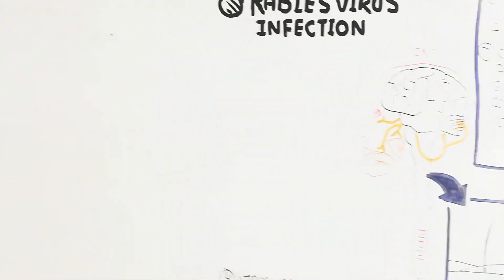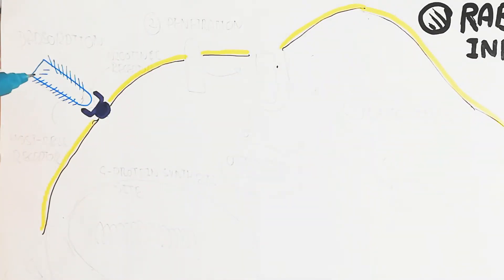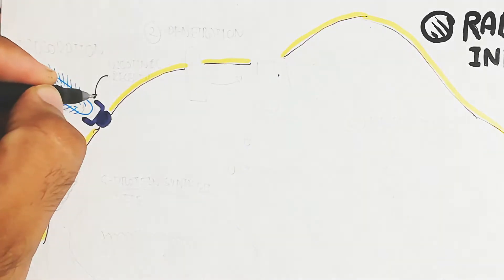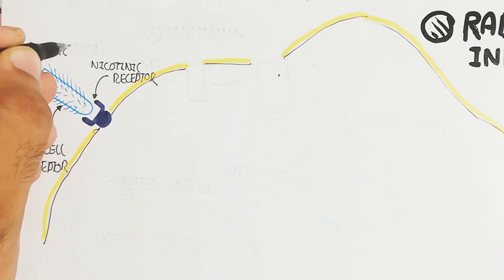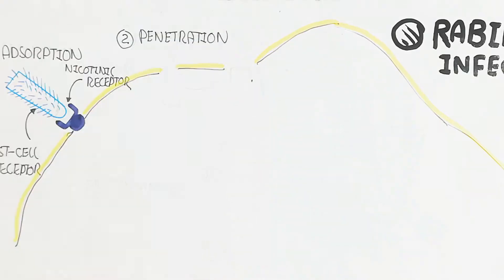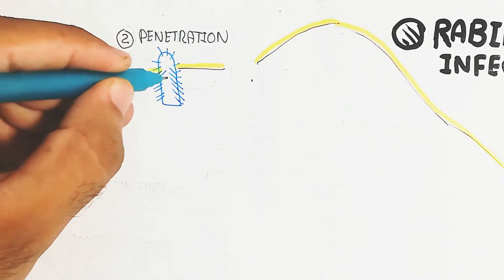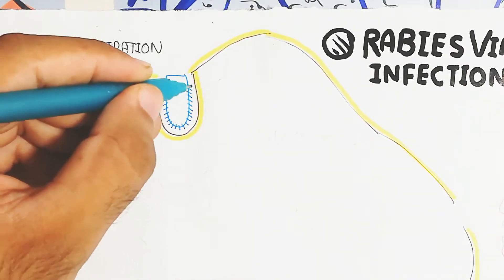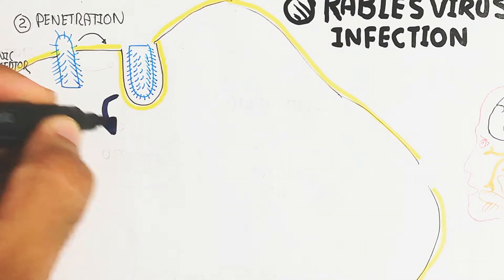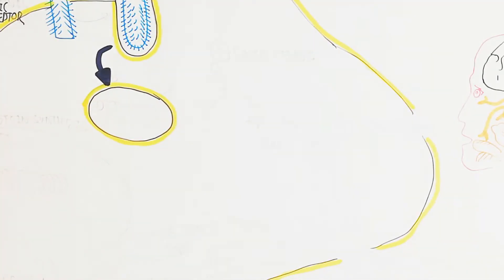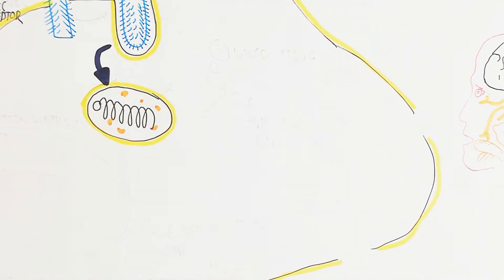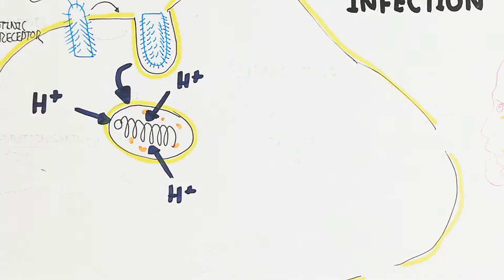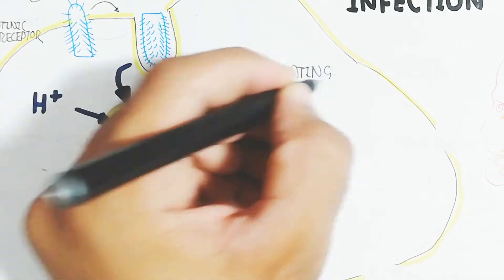The pathway of infection begins with adsorption - the virus binds to the host cell receptor via the nicotinic receptor, sticking to the host membrane. Penetration follows by recognition, moving inside to form an endosome via endocytosis, creating a vesicle containing protein and RNA. When protons move inside, pH decreases becoming more acidic, leading to breakdown of the vesicle and uncoating of the virus.